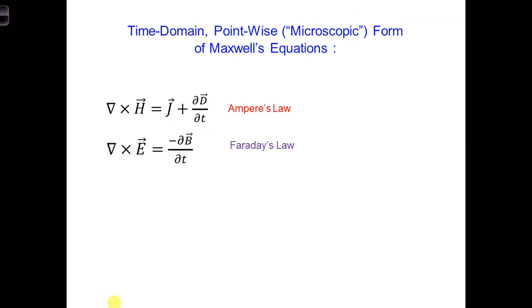Wait a minute. We've seen where the permittivity comes into play. D is equal to epsilon E. But the conductivity, sigma, hasn't shown up in our equations so far.